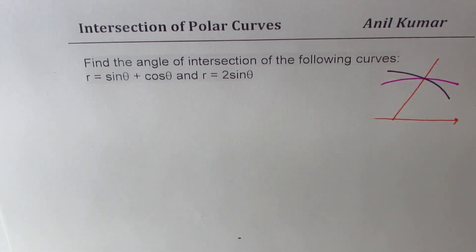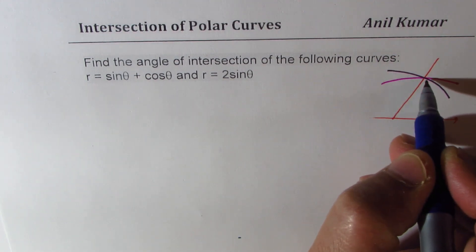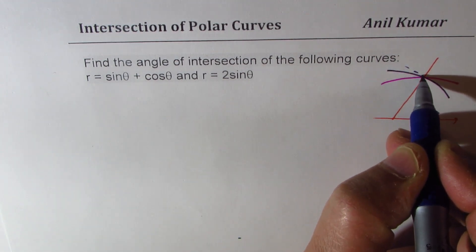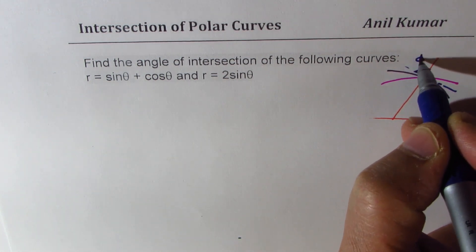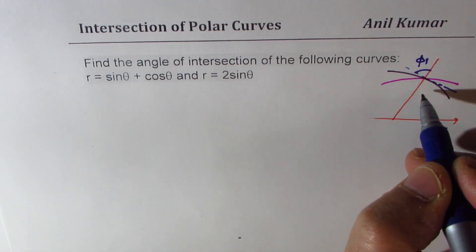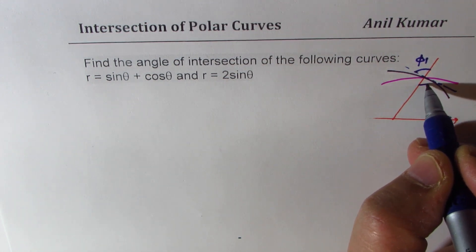So for example, if I have this first curve, then the tangent is like this and the angle is phi 1. Do you see that part? So that means this is phi 1.